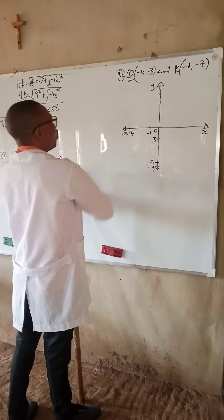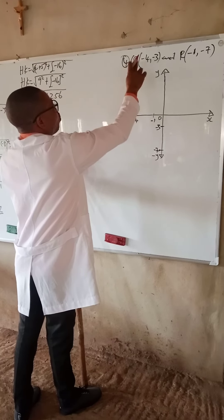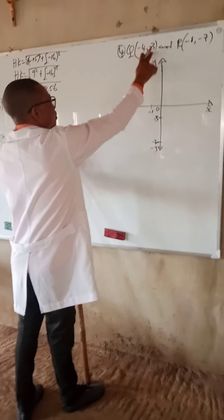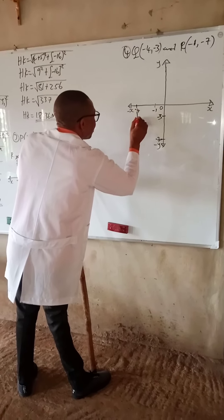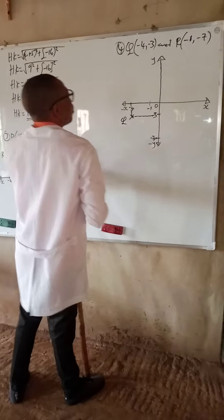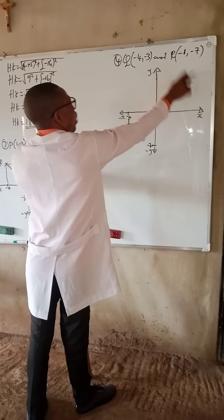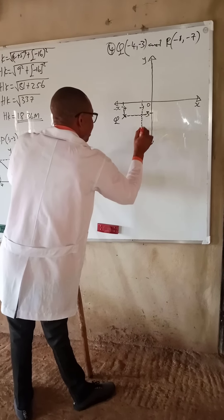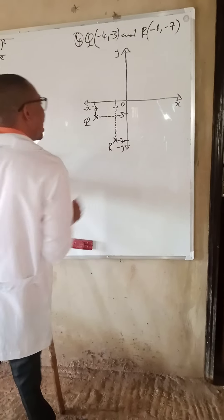We now locate point Q on the Cartesian plane. When x is minus 4, y is minus 3. Using a broken line, this gives us point Q. For point R, when x equals minus 1, y is minus 7. Using a broken line, this gives us point R.